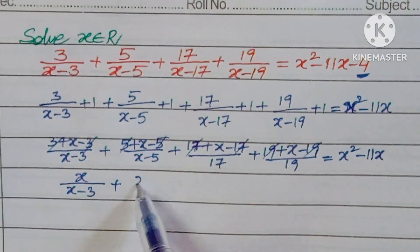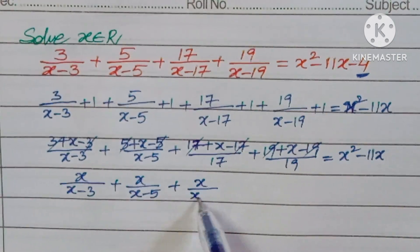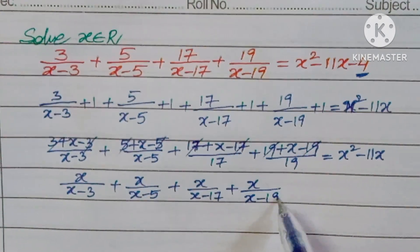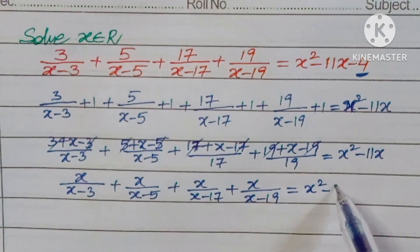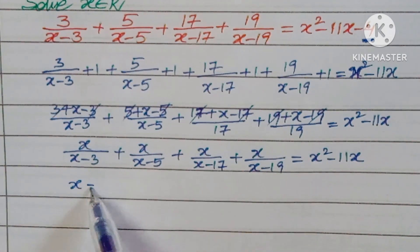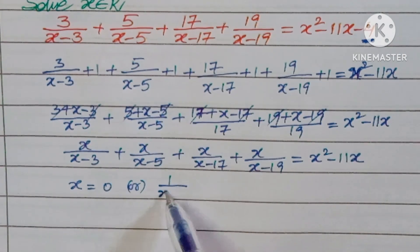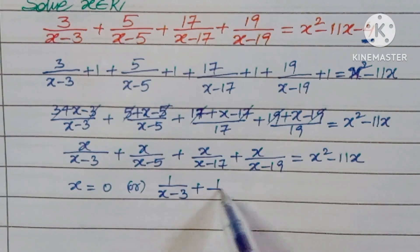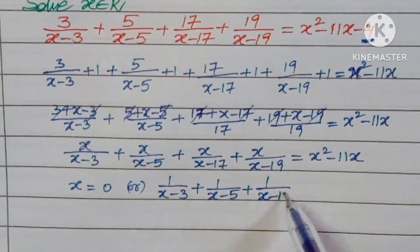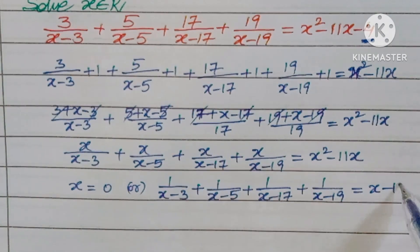So we have x over (x minus 3) plus x over (x minus 5) plus x over (x minus 17) plus x over (x minus 19) equal to x squared minus 11x. From this you can observe x is common, giving x equals 0, or — dividing through by x — 1 over (x minus 3) plus 1 over (x minus 5) plus 1 over (x minus 17) plus 1 over (x minus 19) equals x minus 11.